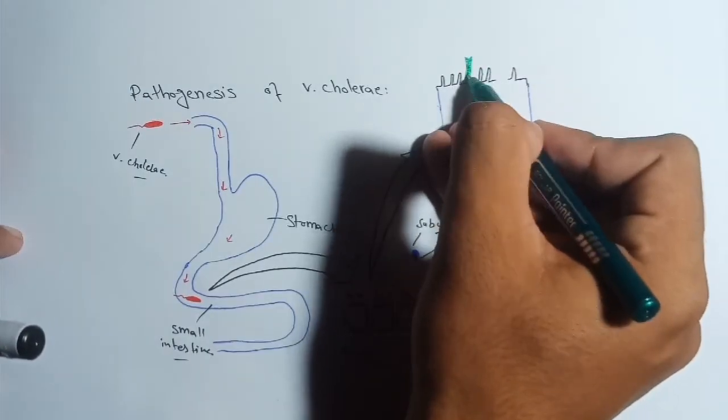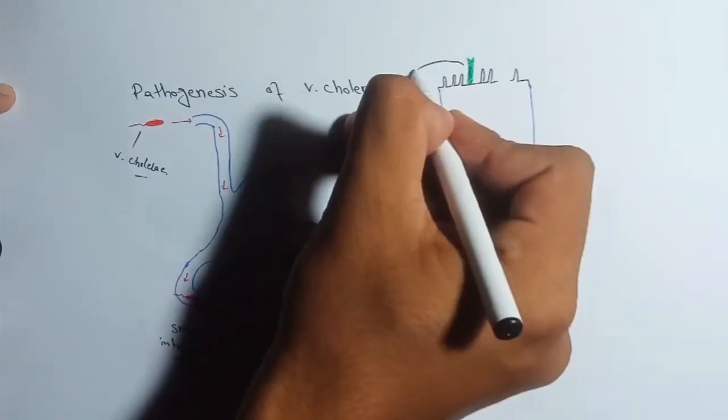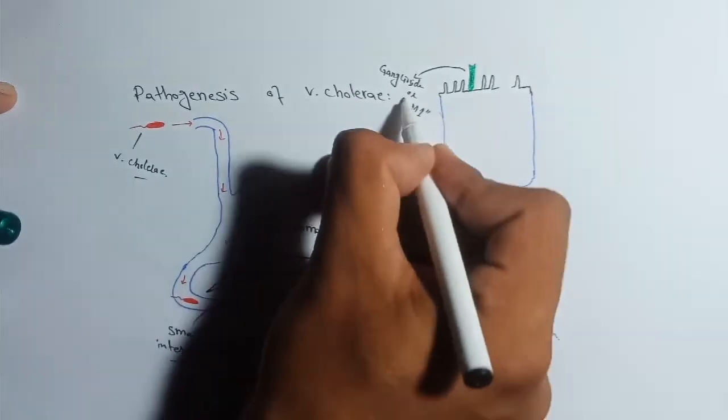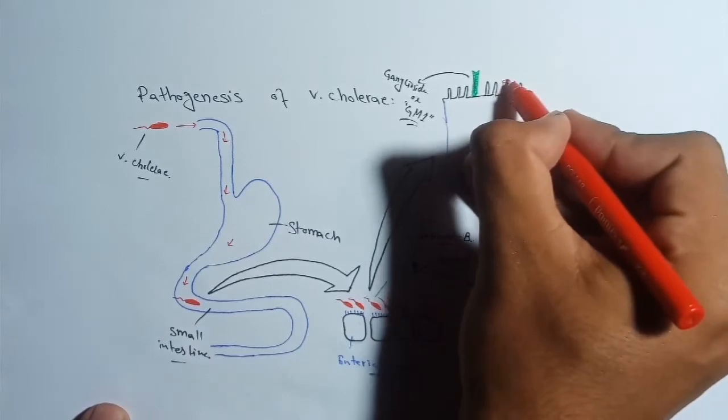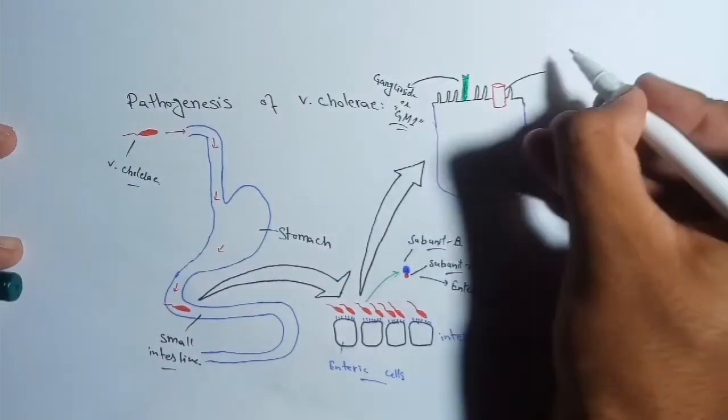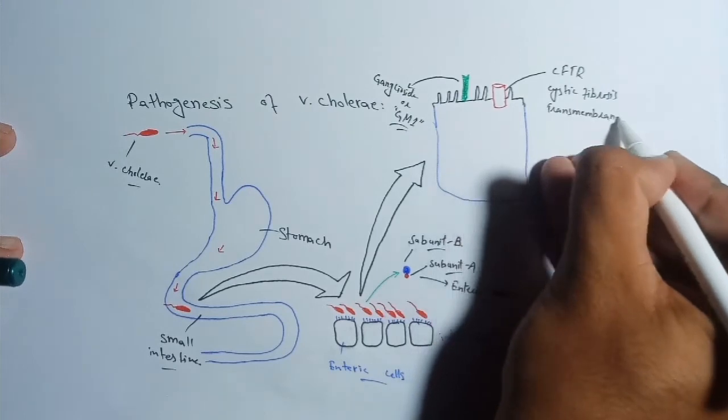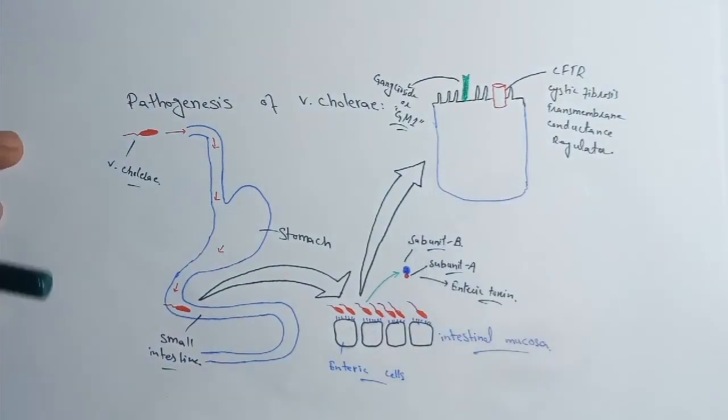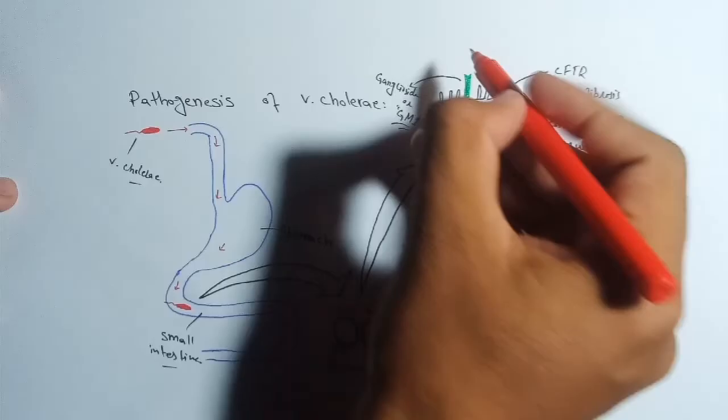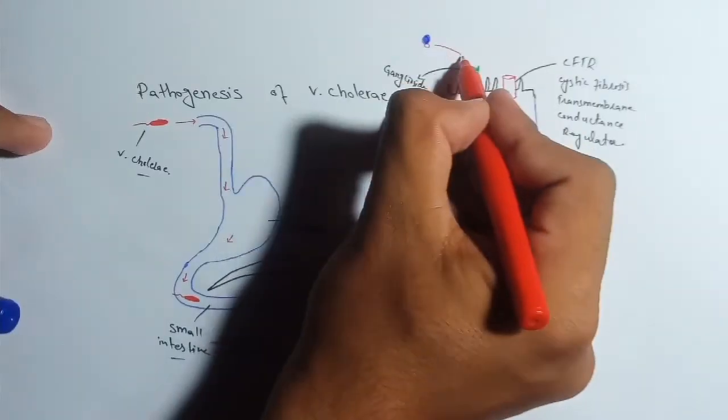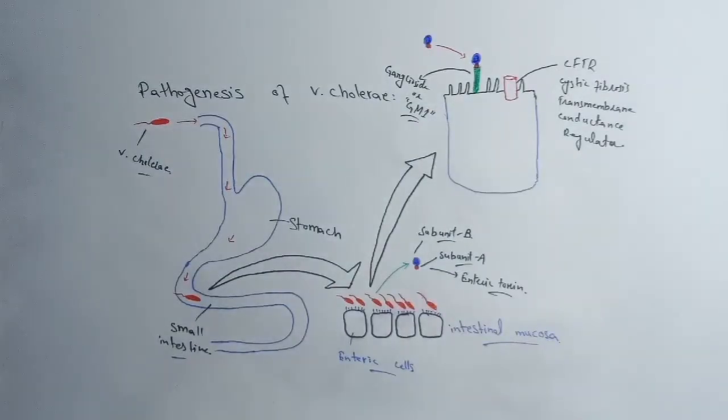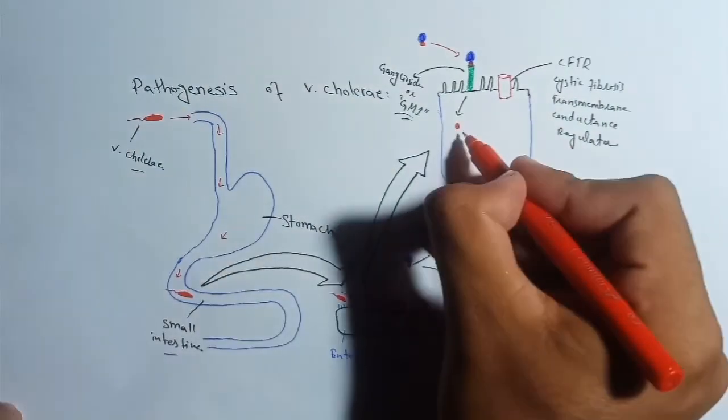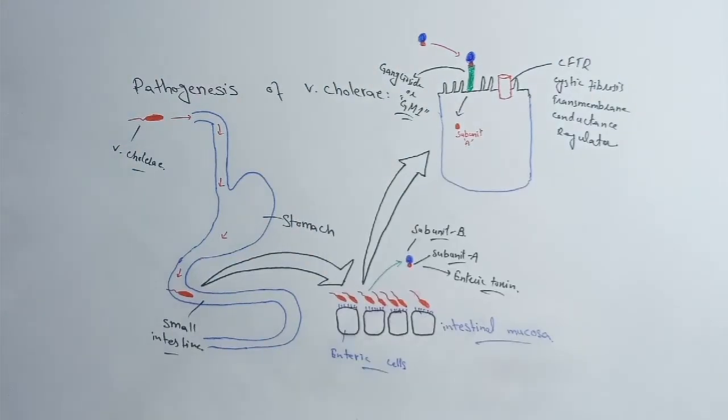When we zoom in, we can see it is an enteric cell. Here it has a special receptor called GM1 at which the toxin enterotoxin actually binds. And here we have CFTR channel, or cystic fibrosis transmembrane conductance regulator. It is a chloride channel through which chloride moves out of the cell. When toxin binds with the GM1, only the subunit A will endocytose into the cell, and this subunit A will activate adenylyl cyclase.